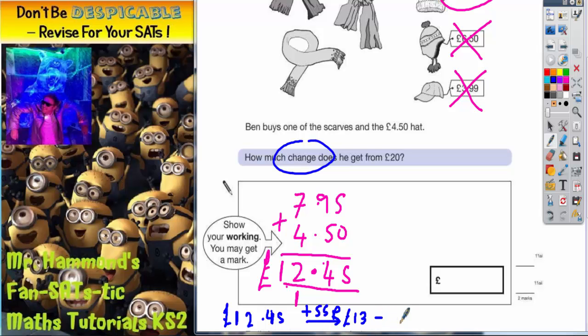Then from £13 up to £20, which is where I need to get to because that's what I'm paying with, that's an extra £7. So altogether, from £12.45 to £20, that would be £7.55. So it looks like the answer is £7.55.